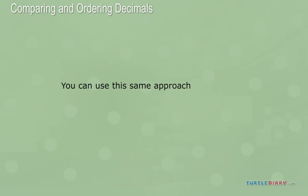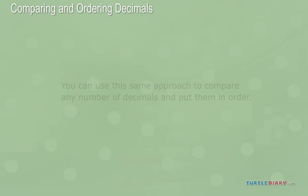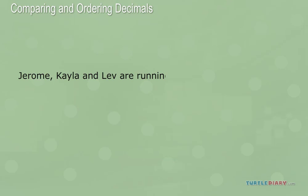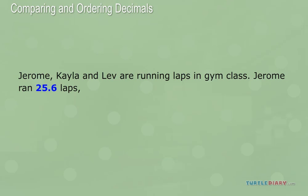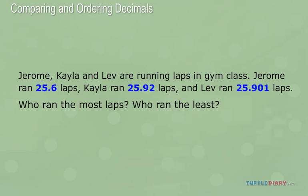You can use this same approach to compare any number of decimals and put them in order. Take a look at this example. Jerome, Kayla, and Lev are running laps in gym class. Jerome ran 25.6 laps, Kayla ran 25.92 laps, and Lev ran 25.901 laps. Who ran the most laps? Who ran the least?